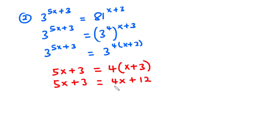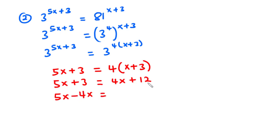Now let's transpose 4x to the left hand side. So we have 5x minus 4x equals 12, and then we transpose positive 3 to the right hand side so that it becomes negative 3.